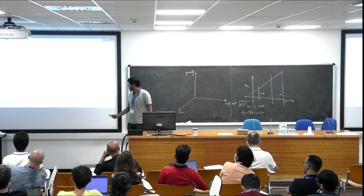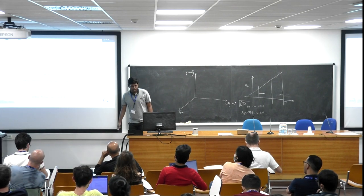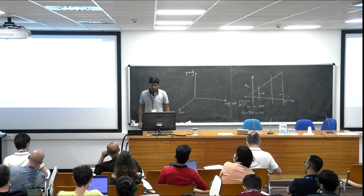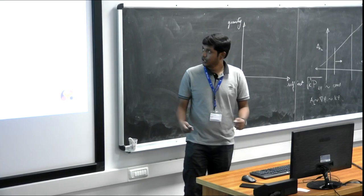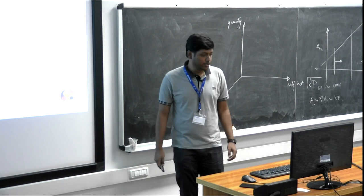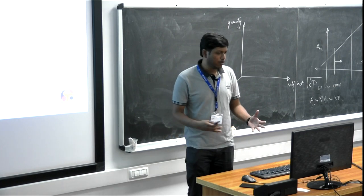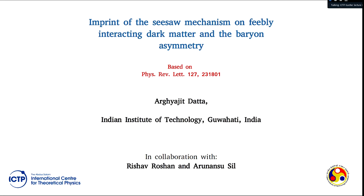I am Orghajit, from India. Today I will be talking about feeble interacting dark matter, a little about baryon asymmetry, and whether there are connections with one of the most popular mechanisms in neutrino mass generation — the seesaw mechanism. From various experimental evidences, we know dark matter exists: it has a finite relic density, it is massive, and it is stable.